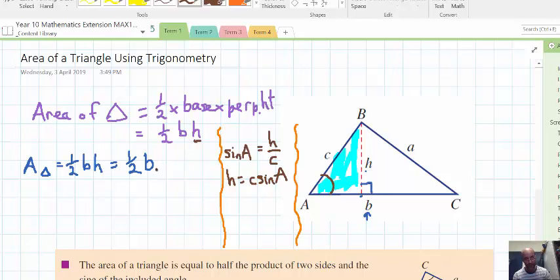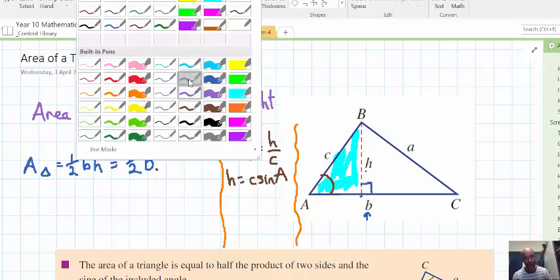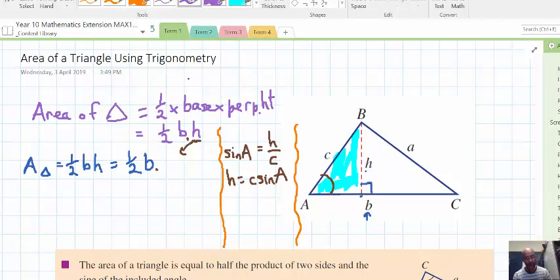So we're going to put that in there. So times, instead of H, we're going to replace it with C times sine A. So we're replacing that directly in there. So, getting my colours corresponding. So we've got, instead of H, we've got C sine A. So half BC sine A. So the area of a triangle is half BC sine A.